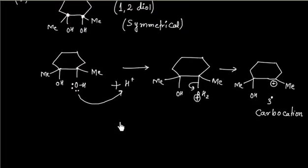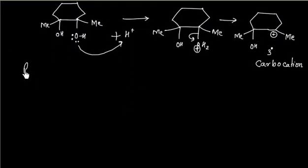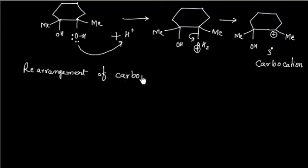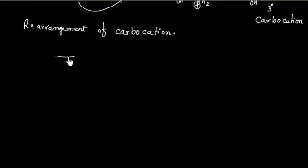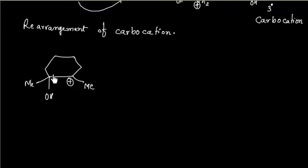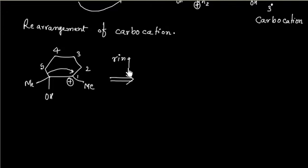This carbocation can rearrange in two ways, so now we have rearrangement of the carbocation. There are two possibilities of rearrangement. Let us consider the first possibility: we can shift this alkyl group, breaking this bond and adding it here. This gives a 5-membered ring — that is ring contraction.